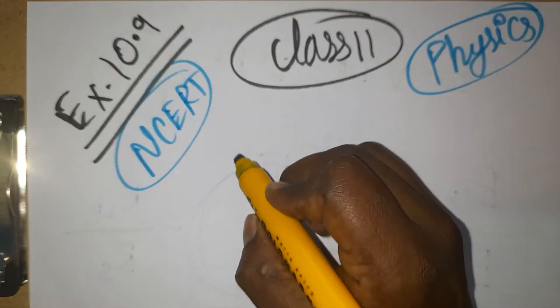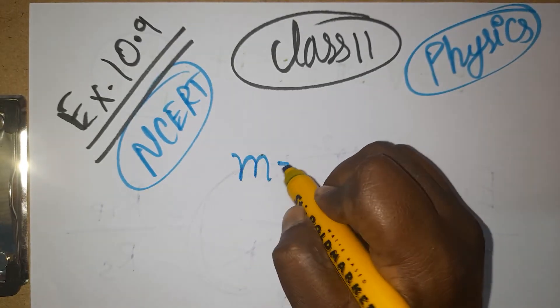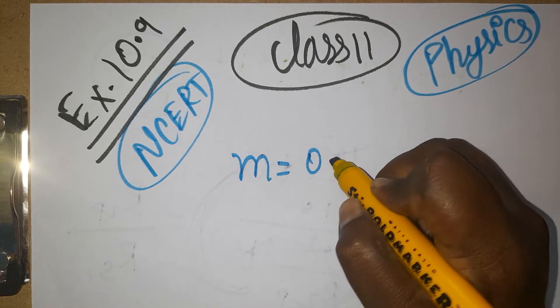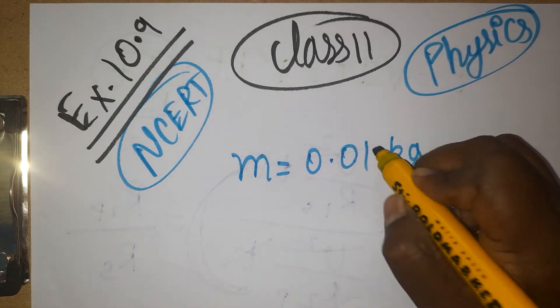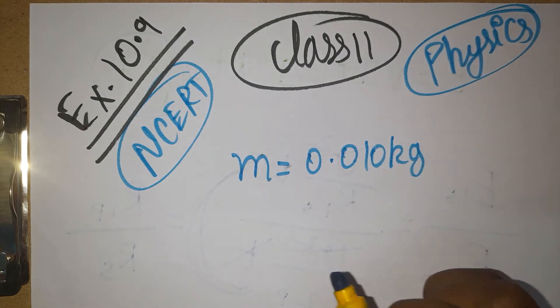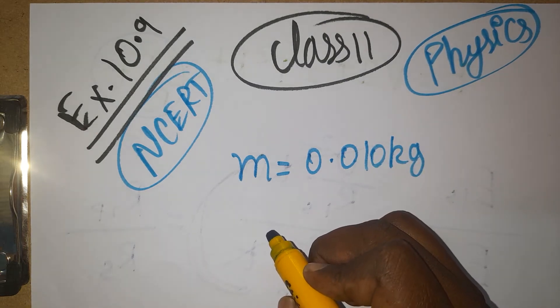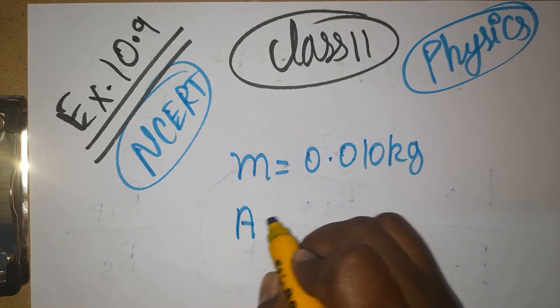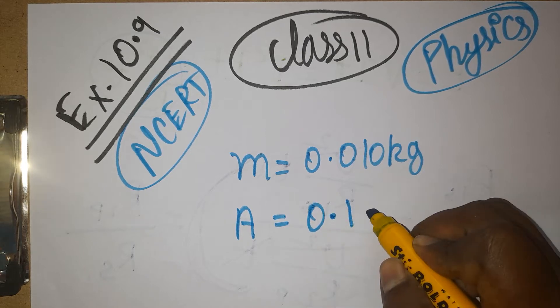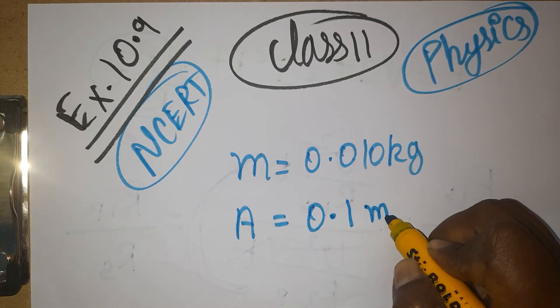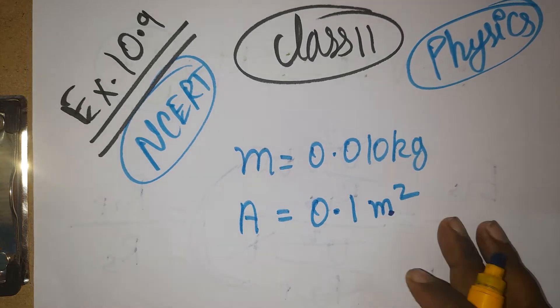First we will see what data is given. The mass of the object is given as 0.01 kg, or 10 grams according to the book. The next one, area is given as 0.1 m², in SI units.